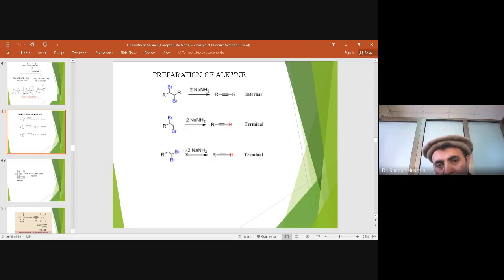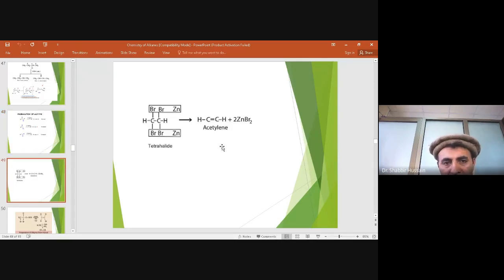So we can synthesize this alkyne when two moles of sodium amide is treated with geminal dihalides, dibromides. So this is one of the methods.